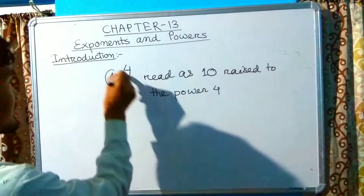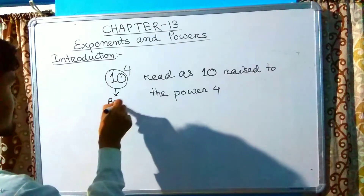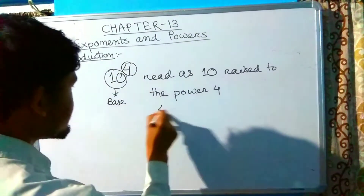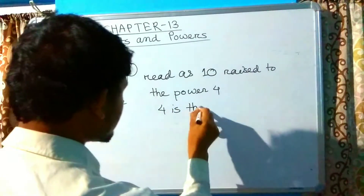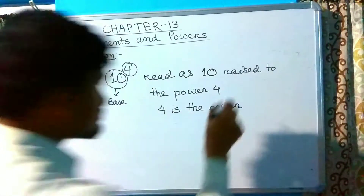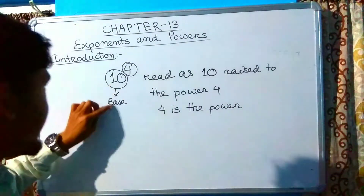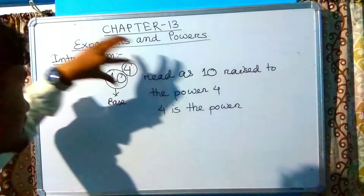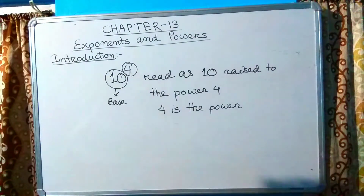In 10 raised to the power 4: 10 is the base and 4 is the power. As a whole, this expression is called the exponential form.